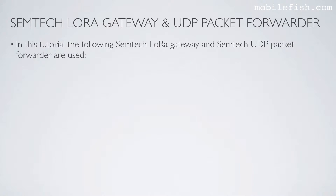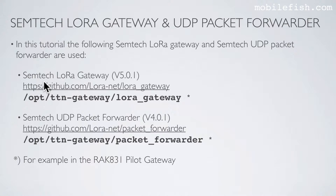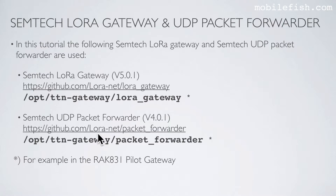In this tutorial, the following Samtec LoRa gateway and Samtec UDP packet forwarder are used. The Samtec LoRa gateway version 5.0.1 — the code can be found at this GitHub page, and in the Rack A31 pilot gateway it is installed at this location. The Samtec UDP packet forwarder version 4.0.1 — the code can be found at this GitHub page, and in the Rack A31 pilot gateway it is installed at this location.